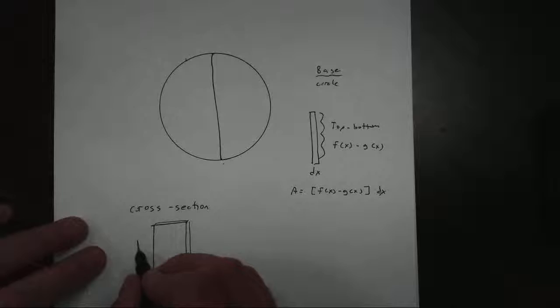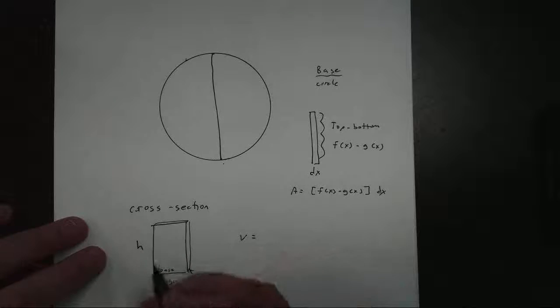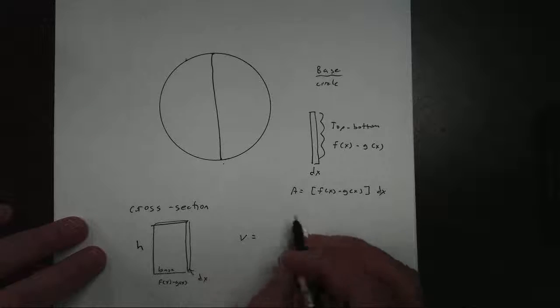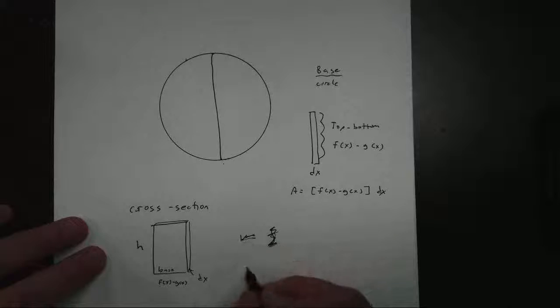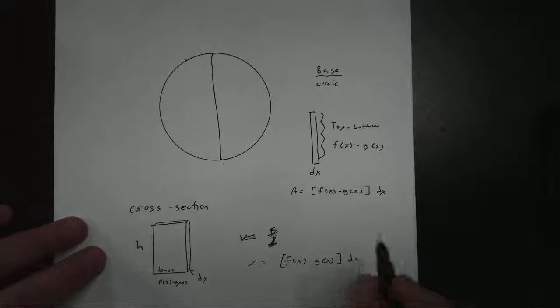To get the height, we'll just call that h. So the volume of my cross-section, which is what I want, is going to be this [f(x) - g(x)] times dx, the area of the base, times the height.